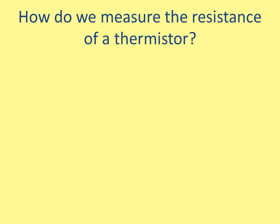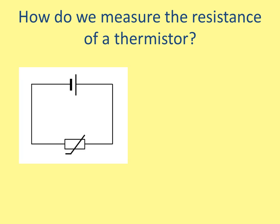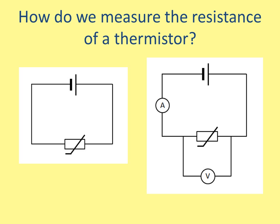The next thing you need to know is how to measure the resistance of a thermistor. If I connected a thermistor to a simple circuit like this one, it's useless because I can't get any information from it. Therefore I need to connect it to an ammeter and a voltmeter. Remember, the ammeter goes in series and the voltmeter goes in parallel. From this I can use Ohm's law — V equals I times R — to calculate the resistance.